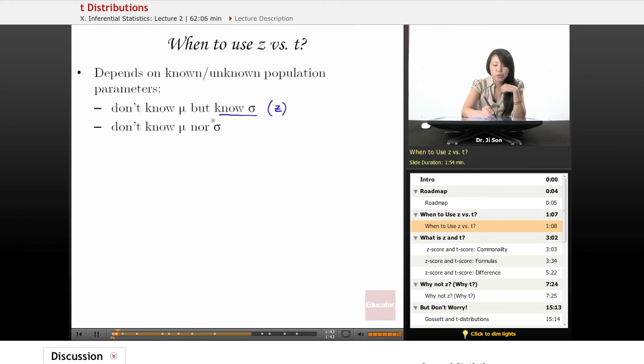But in other situations, we do not know what sigma is. And in that case, we use T in order to figure out how many standard errors away our X-bar is from our mu.